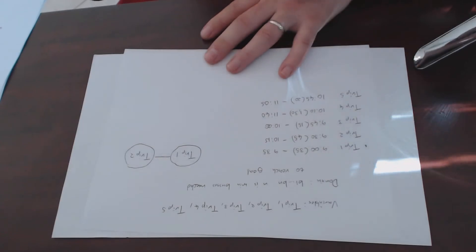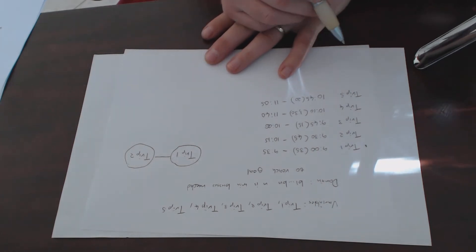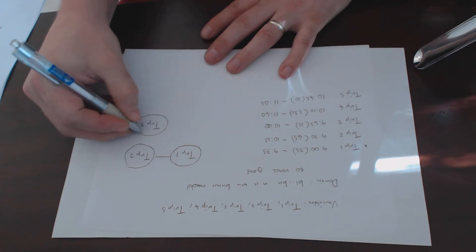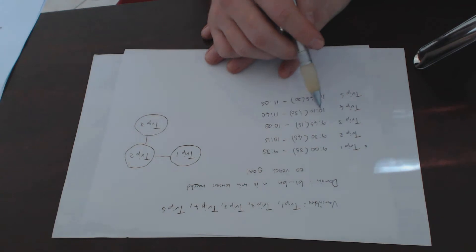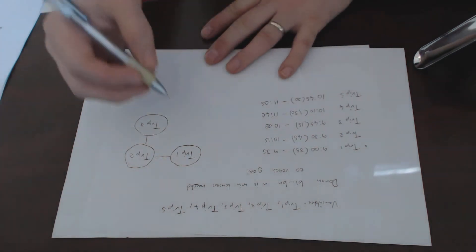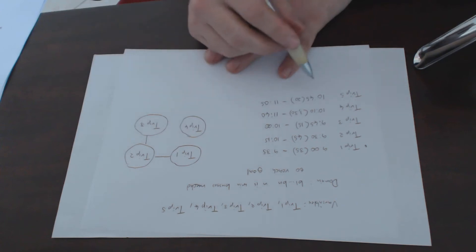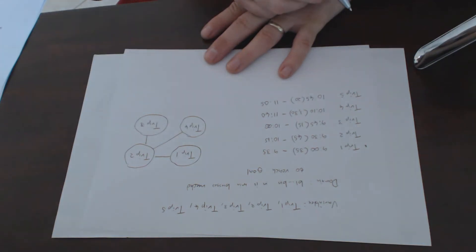So we move on to trip2, 9:30 to 10:15. We've already identified that there's a constraint on trip1, but there's also a constraint on trip3 because the arrival back of trip2 at 10:15 is after 9:45, and there's a constraint on trip4 because that is starting at 10:10 and trip2 only arrives back at 10:15.